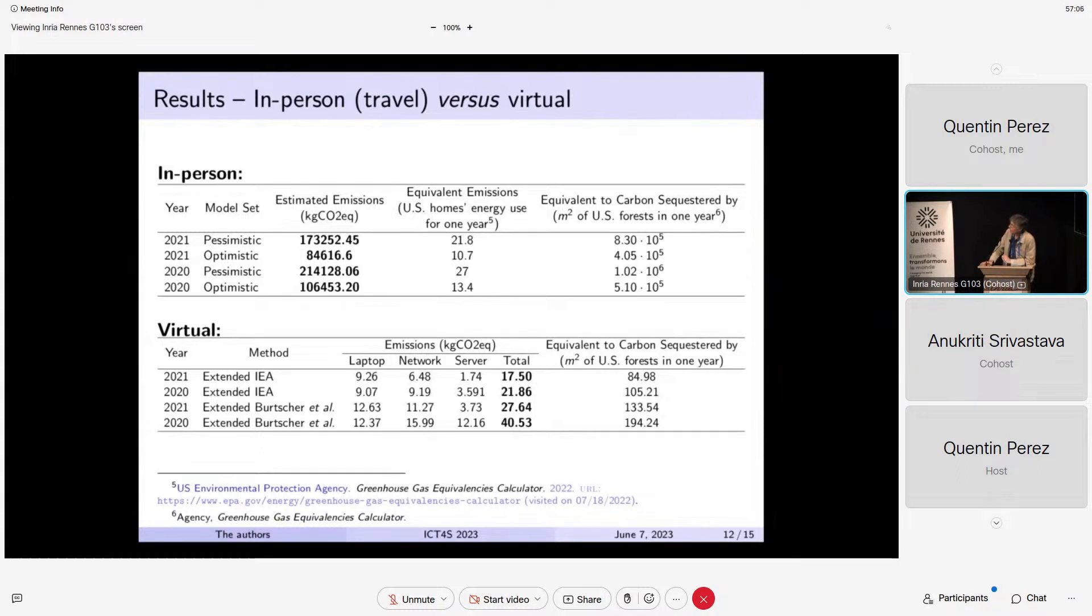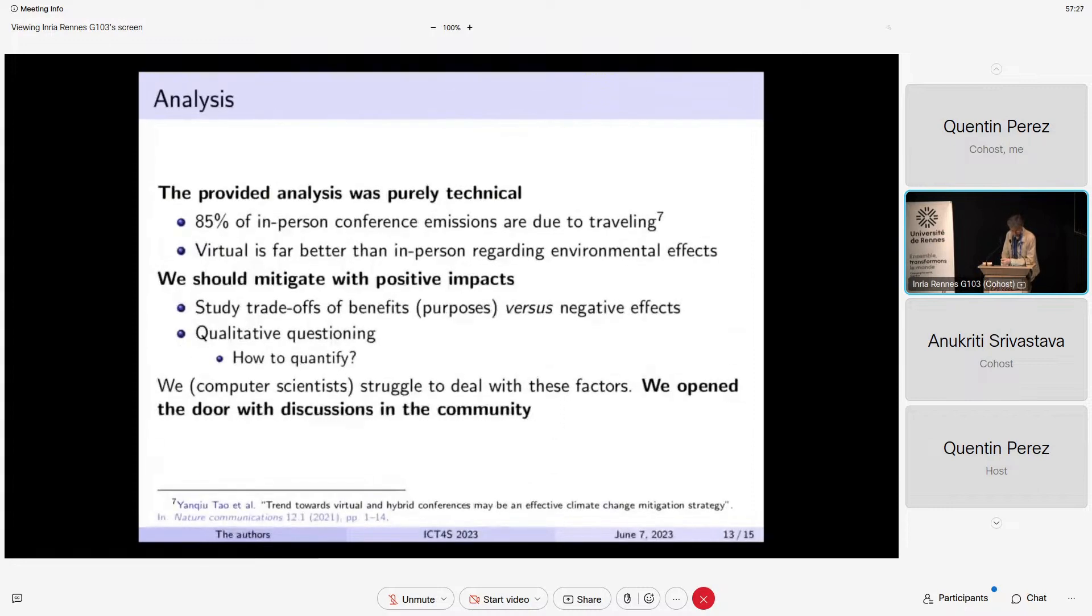And you have the laptop, network, servers, and the total here. We just gave the equivalent of carbon sequestered by square meter. So you can see here that there are a lot of differences, several orders of magnitude. OK, so no choice. Virtual is far better.